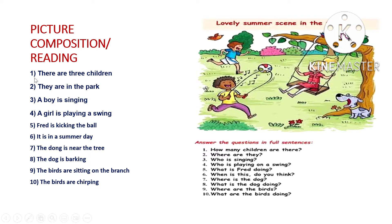For example, in this picture there are a few questions. Let's answer them. How many children are there? There are three children. Where are they? They are in the park. Who is singing? A boy is singing. Who is playing on a swing? A girl is playing on a swing.